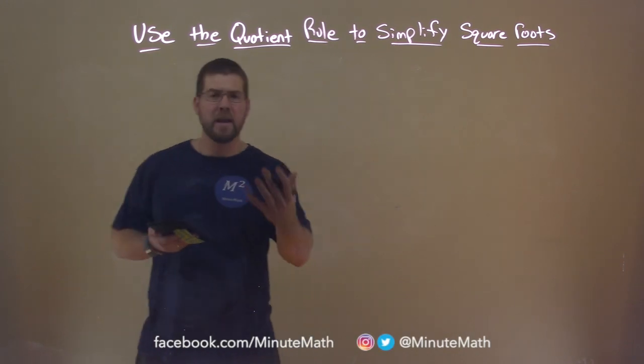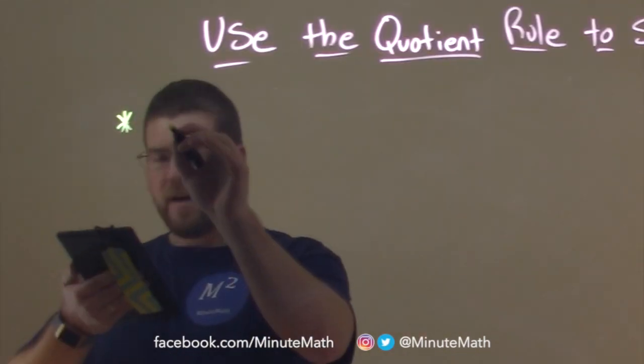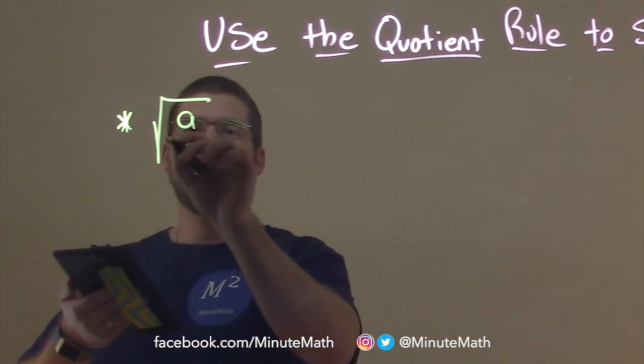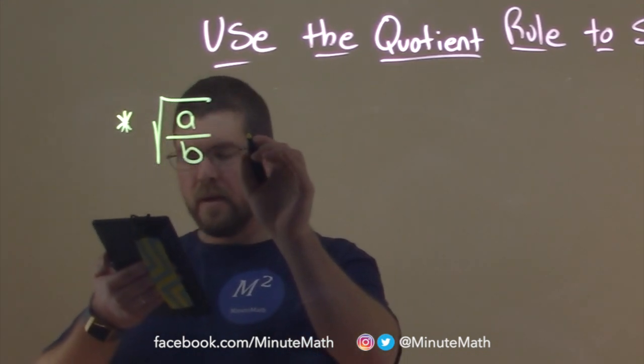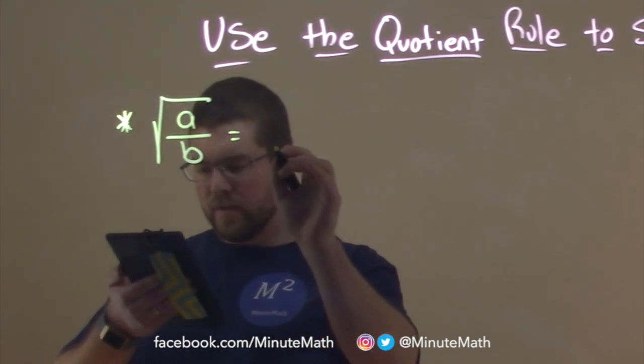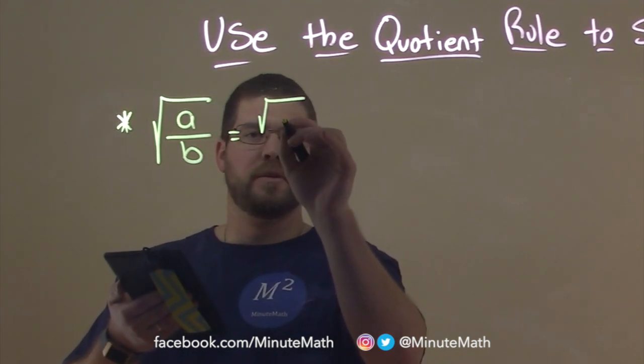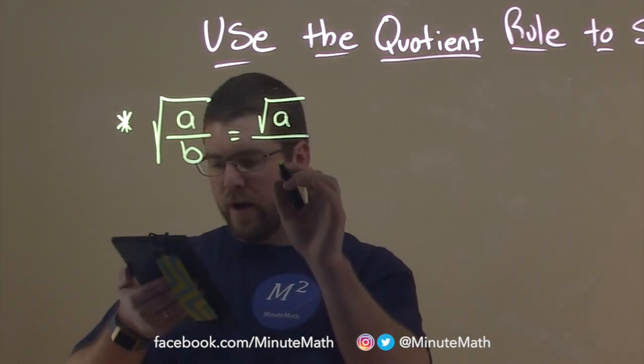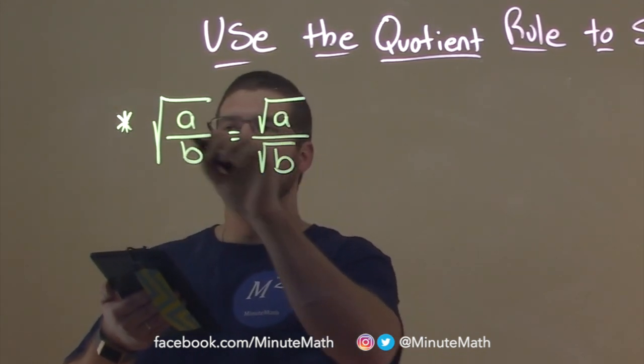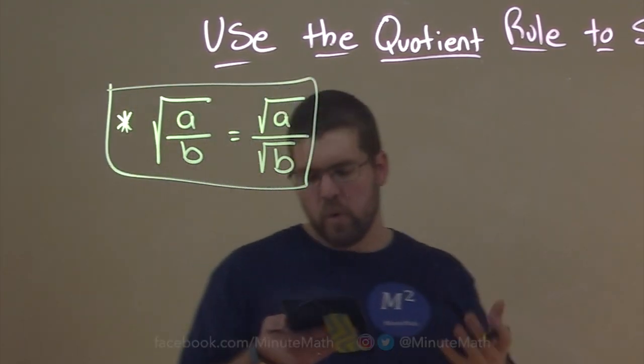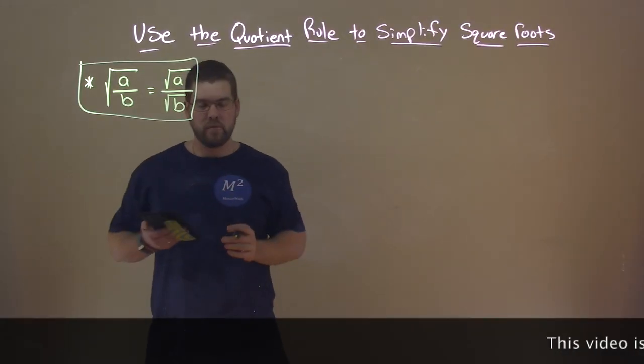So what is that in a nutshell? It is this. We have the square root of A over B, remember the whole thing together, is equal to each one individually. The square root of A divided by the square root of B.